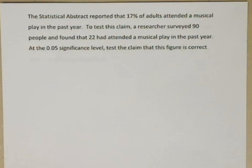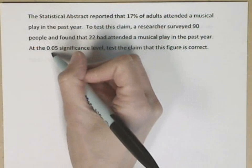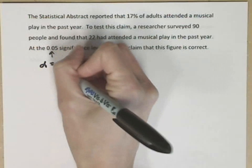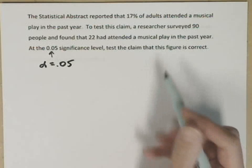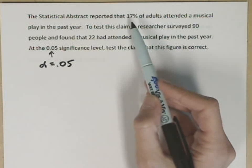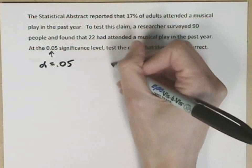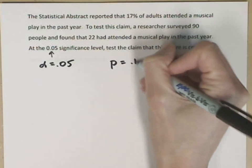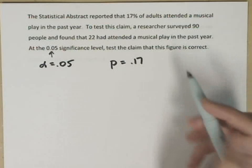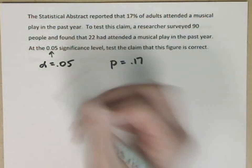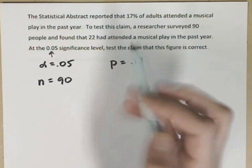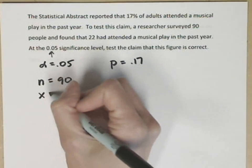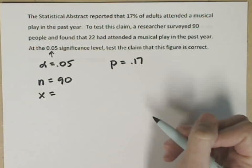At the .05 significance level, test the claim that this figure is correct. As we pull out some of the information, this .05, our significance level is alpha, so alpha equals .05. 17% is our hypothesized percentage, so P is .17. For our sample, we had 90 people surveyed, so n equals 90. The amount of people that said they had attended a play is our x, our number of successes, which is 22.